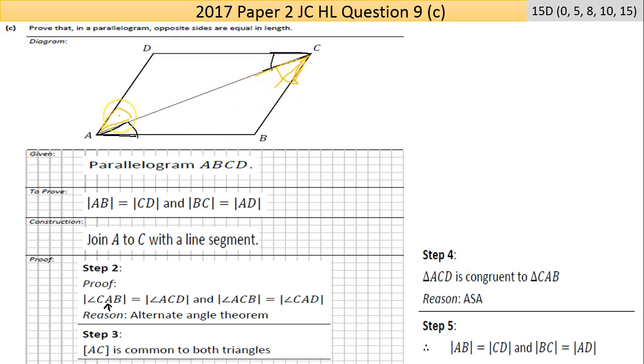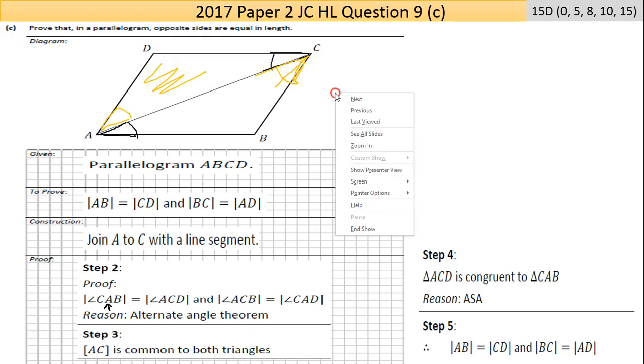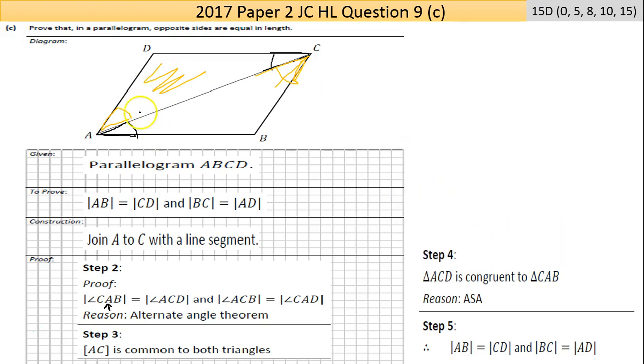Now Step 3: you're saying that AC is common to both triangles. And because of that - angle, side, angle - proves that triangle ACD, this one here, is congruent to triangle CAB, this one here.